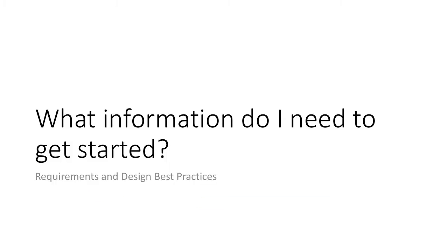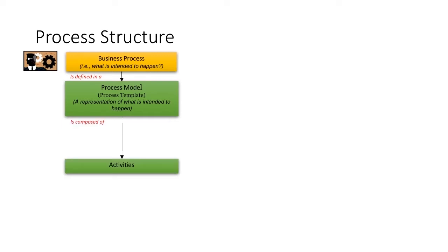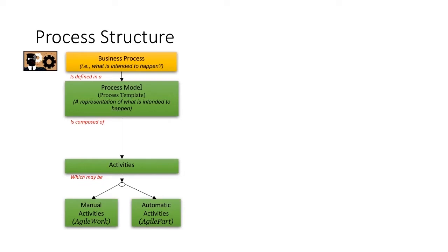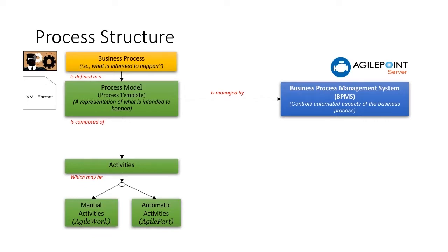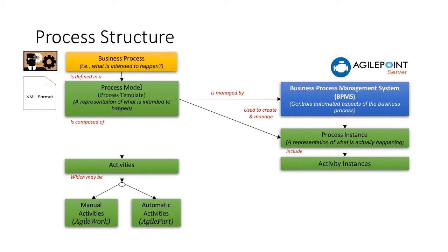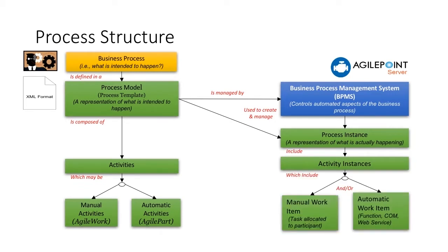What information do you need to get started? You need to understand the requirements and design best practices. AgilePoint is a model-driven, low-code application platform that allows you to configure activities, conditions, and routing instructions based on your business process structure and requirements. This configuration is stored in an XPDL XML document, which is published to the AgilePoint server for runtime, and the server interprets the XML document to determine how the application should be executed.